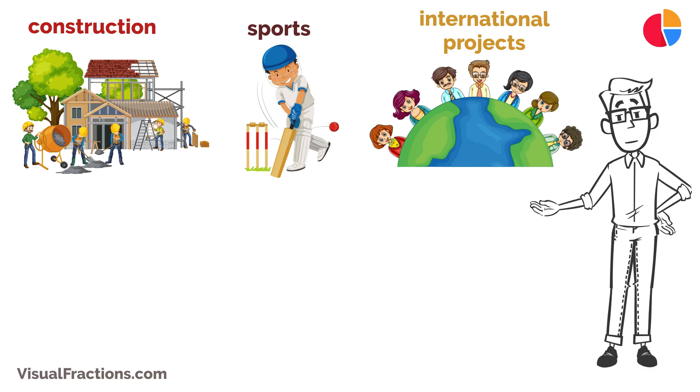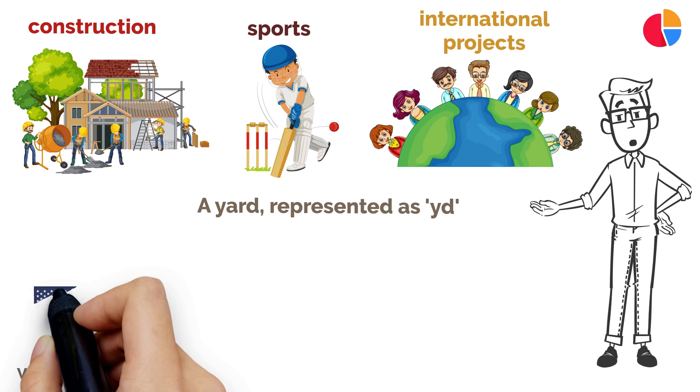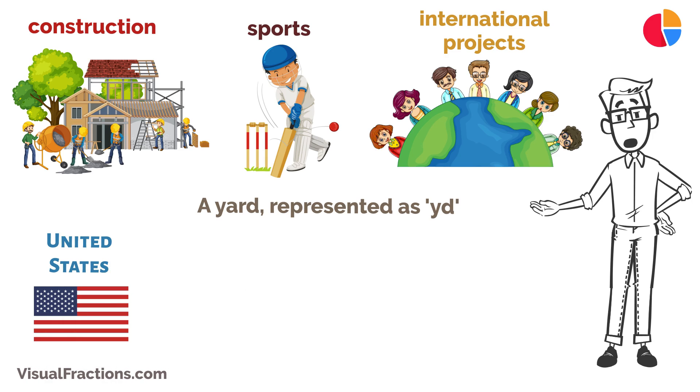This conversion is key for those who need to bridge measurements between the imperial and metric systems. Let's get to the basics. A yard, represented as YD, is a unit of length in the imperial and United States customary systems.